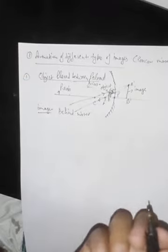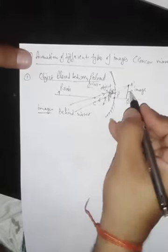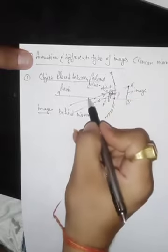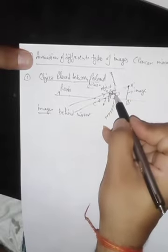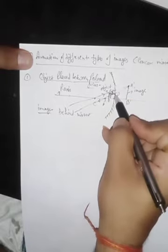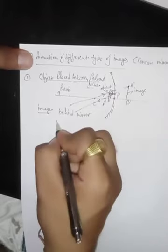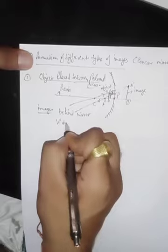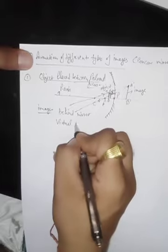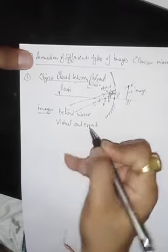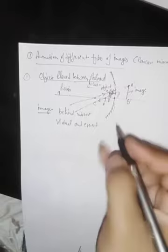The image formed behind the mirror is not real — when the image forms behind the mirror it is virtual. So the image is virtual and erect.